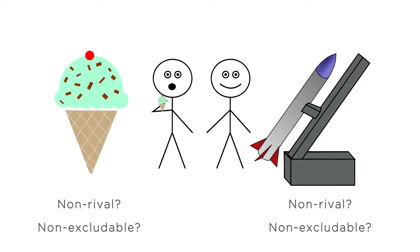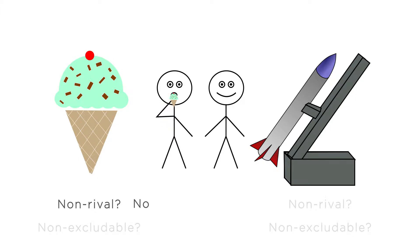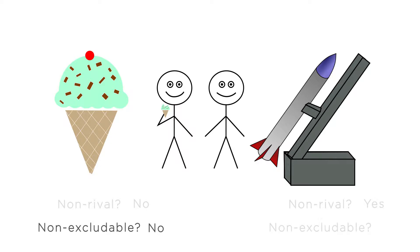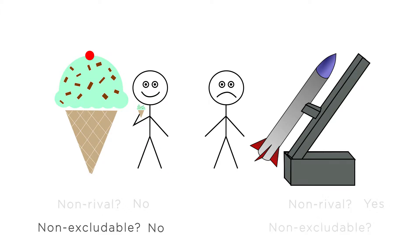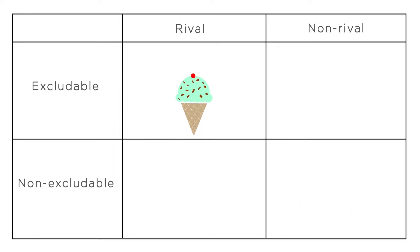Consider an extreme example: an ice cream cone versus a missile. An ice cream cone is clearly not non-rival — if I eat an ice cream cone, you can't eat that same ice cream cone. But a missile is non-rival; if I'm protected by a missile, that doesn't in any way lower the protection you receive from the same missile. An ice cream cone is also clearly not non-excludable — I don't have to give you my ice cream, and I certainly won't if you refuse to pay for it. But a missile is non-excludable: once a government is protecting some area with a missile, it can't just tell some people in the area they're not covered. Goods like ice cream cones, cars, or houses, which are rival and excludable, are called private goods.